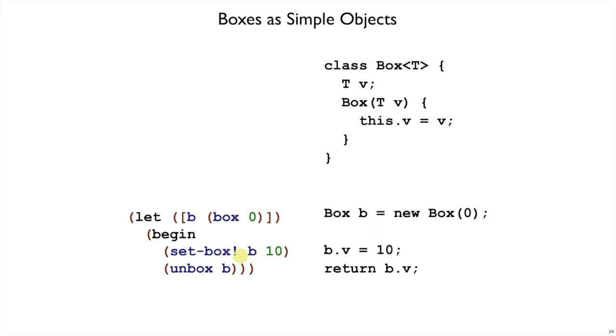When you use setBox in plate, that's like changing the value of the field inside the object, and when you use unbox, that's like just extracting the value of the field using the dot operator.